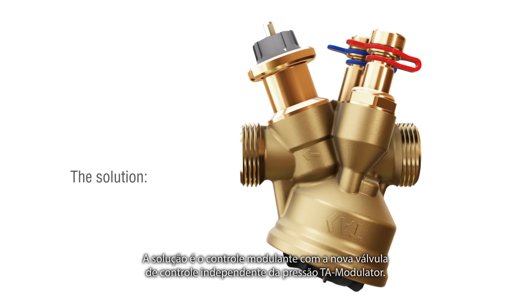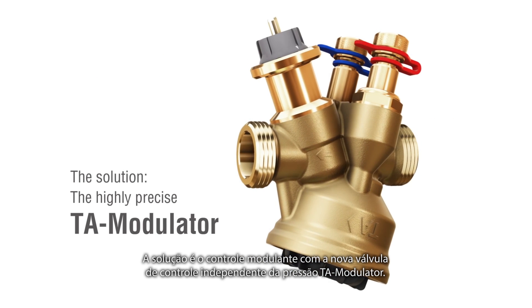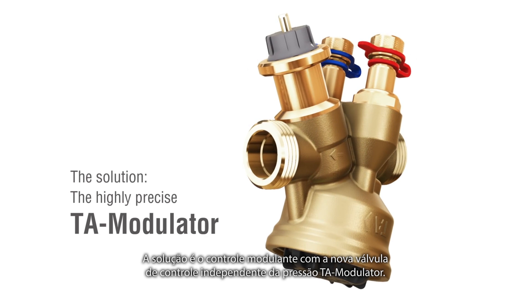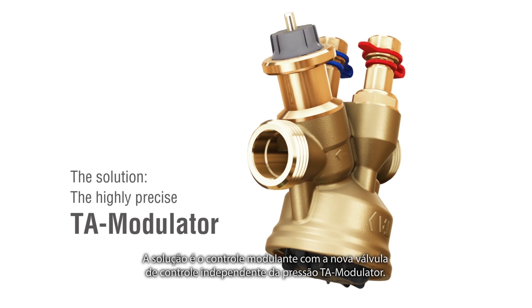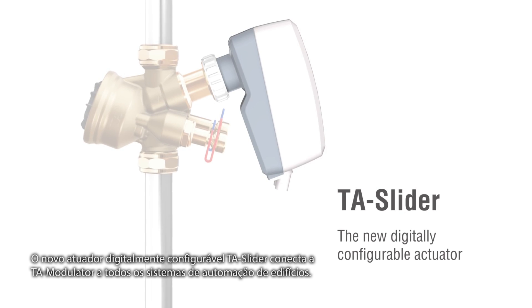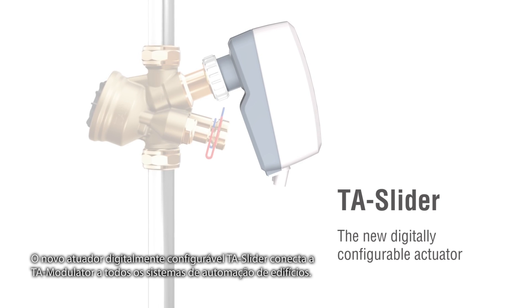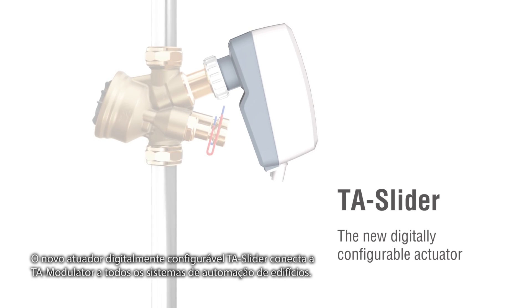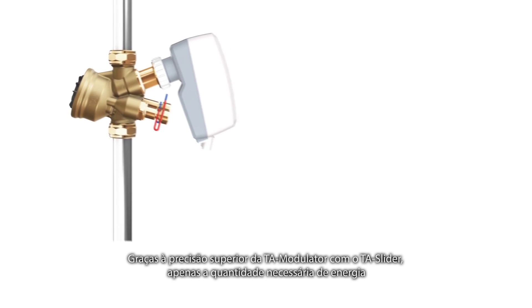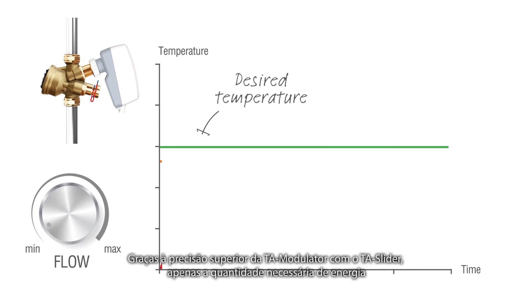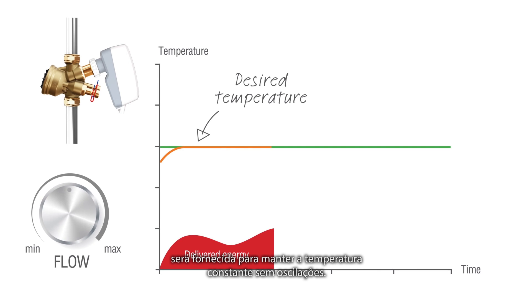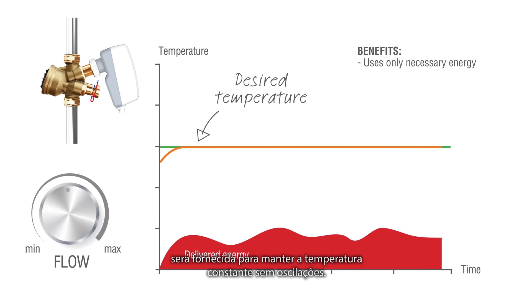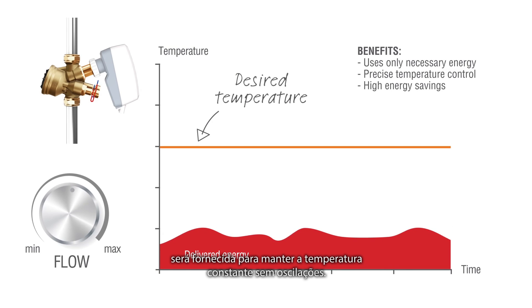The solution is modulating control with the new highly precise pressure independent control valve TA modulator. The new digitally configurable actuator TA slider connects TA modulator to all building automation systems. Due to the superior accuracy of TA modulator with TA slider, only the necessary amount of energy is delivered to keep the temperature constant without any oscillations.